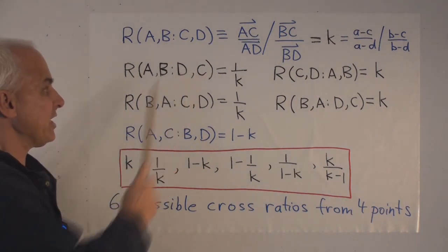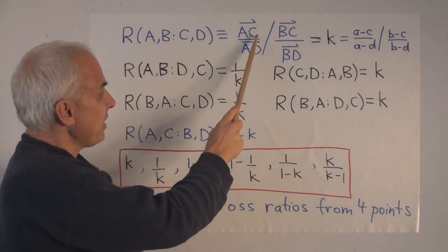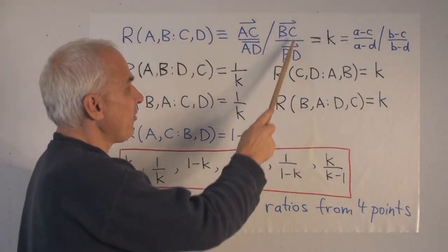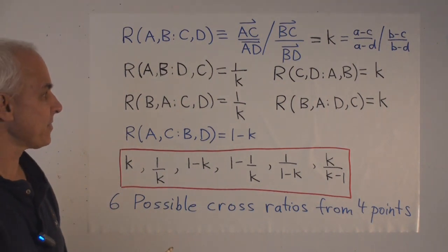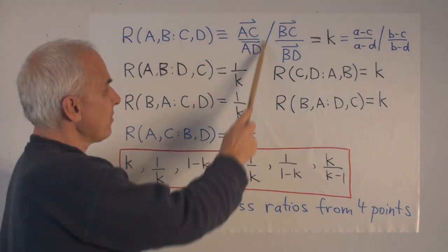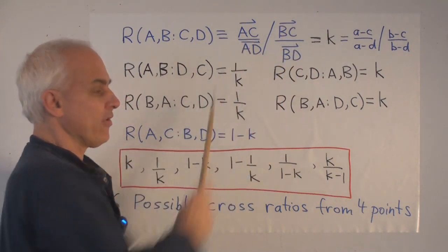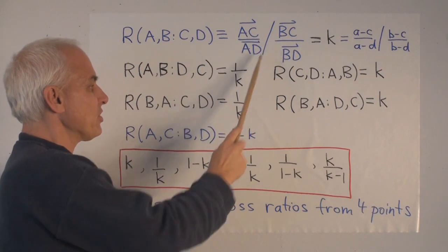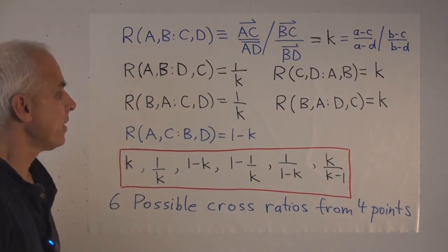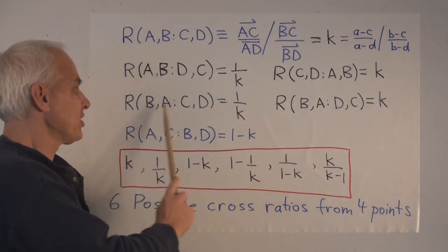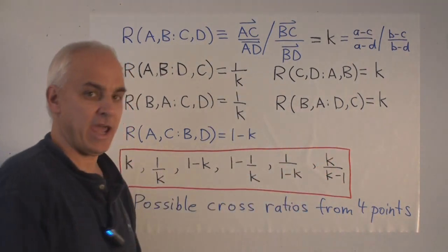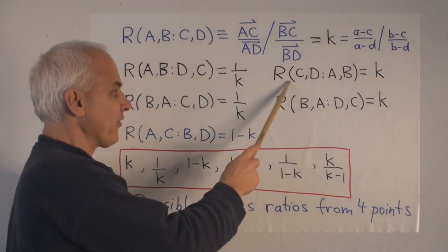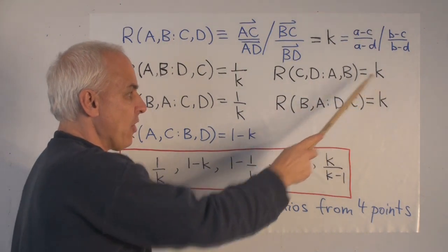First, what happens if we interchange C and D? Well, if we interchange C and D, then this pair inverts, and this pair inverts. So the entire ratio inverts, and we get 1 over K instead. What if we interchange A and B? If we interchange A and B, then this ratio here becomes exactly this ratio, and this one becomes this ratio. So again, the ratio of ratios inverts, and we get 1 over K. If we do both of these interchanges, so we interchange A and B, and interchange D and C, then we get B, A, D, C, and that's going to then be back to K. And I'll leave it to you to check that also if you interchange A, B and C, and D in this fashion, you also get back to K.